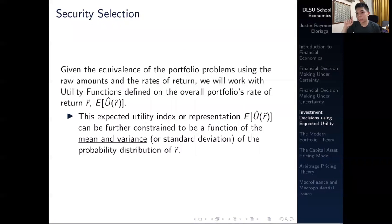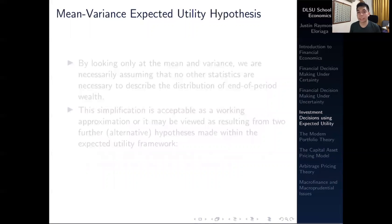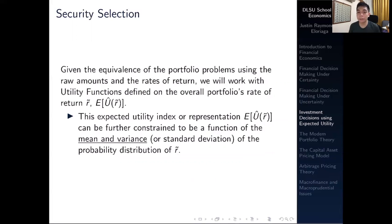Given the equivalence of the portfolio problems using raw amounts and rates of return, we can work with the utility function defined over the portfolio's rate of return — it's easier to think in terms of rates of return rather than raw amounts, just as an investor would prefer. In the upcoming video, we'll discuss how this expected utility representation can be further constrained to be a function of the mean and variance of the probability distribution of the rate of return — the mean-variance expected utility hypothesis. Thank you for your attention and I'll see you in the next video.